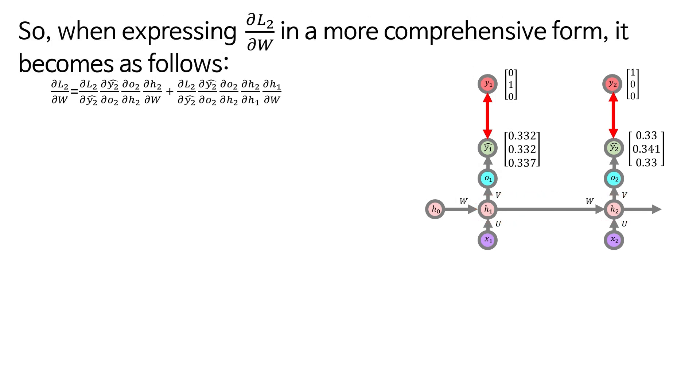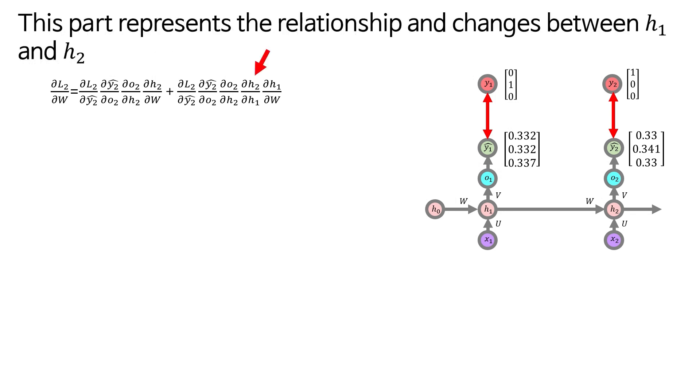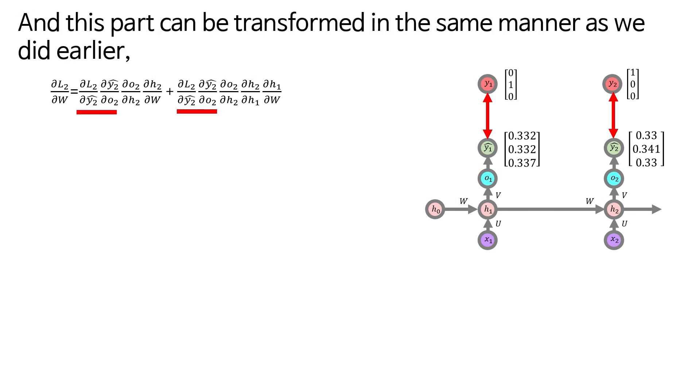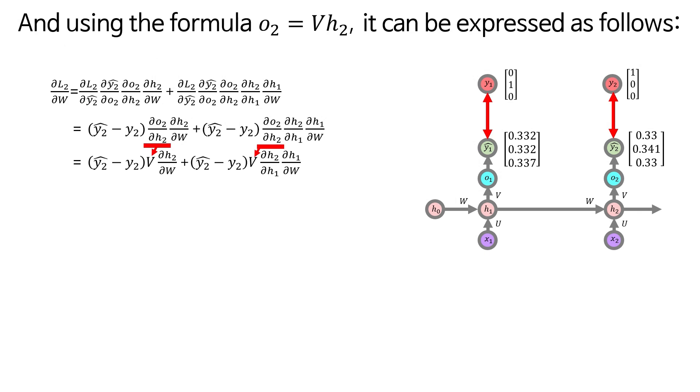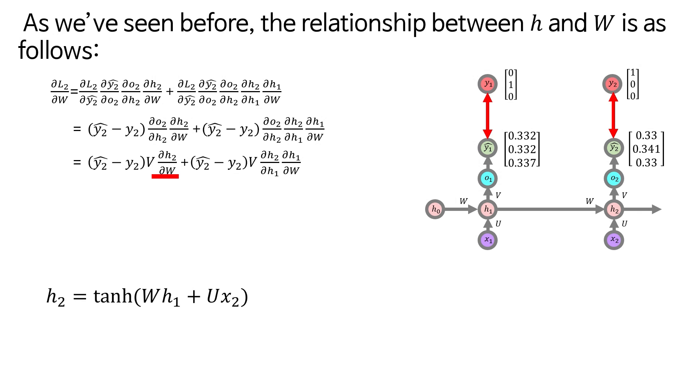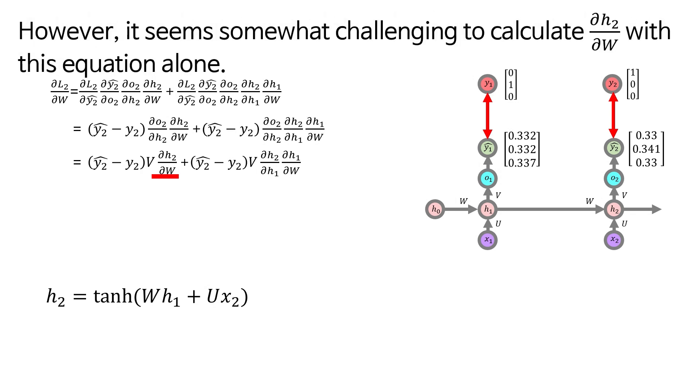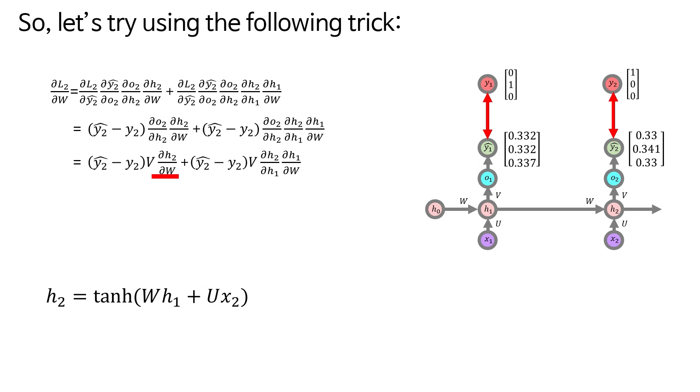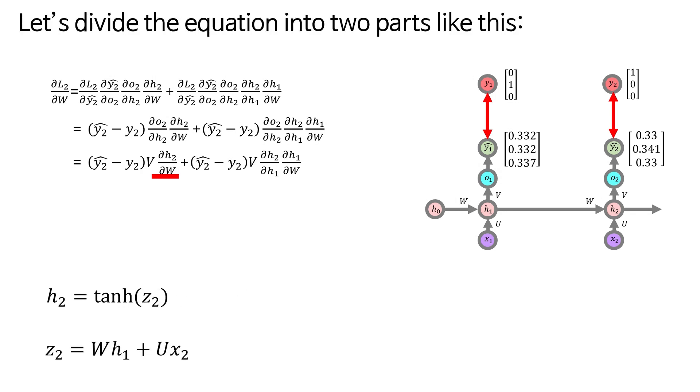So, when expressing del L2 del W in a more comprehensive form, it becomes as follows. This part represents the relationship and changes between H1 and H2. And this part can be transformed in the same manner as we did earlier. Like this. And using the formula O2 equals VH2, it can be expressed as follows. Now, let's calculate del H2 del W. As we've seen before, the relationship between H and W is as follows. However, it seems somewhat challenging to calculate del H2 del W with this equation alone. So, let's try using the following trick. Let's divide the equation into two parts like this.